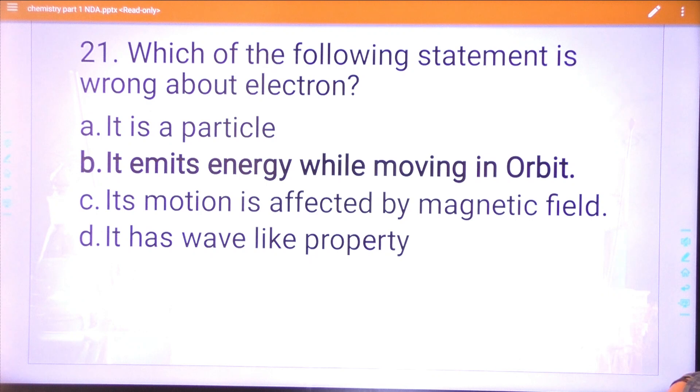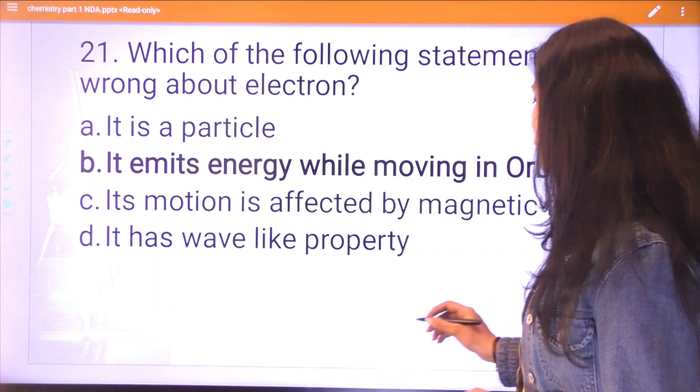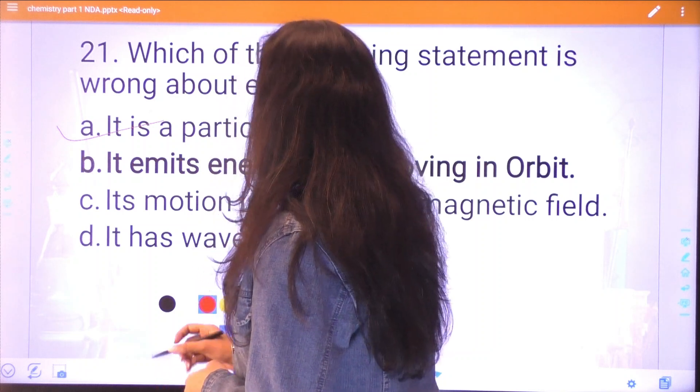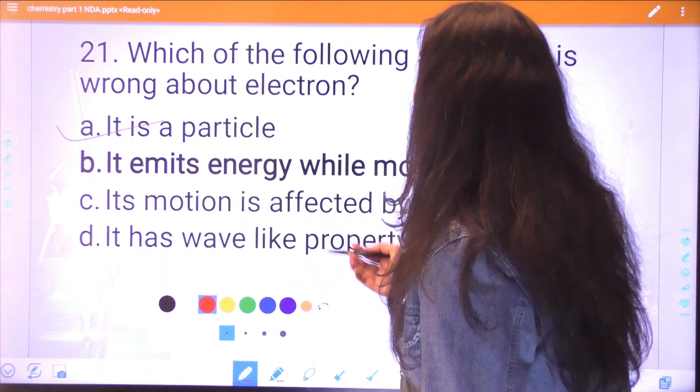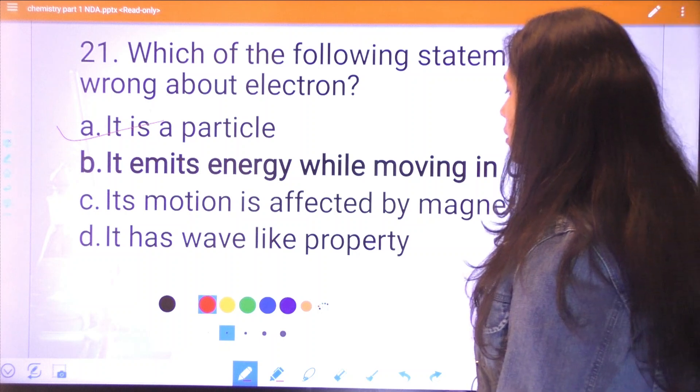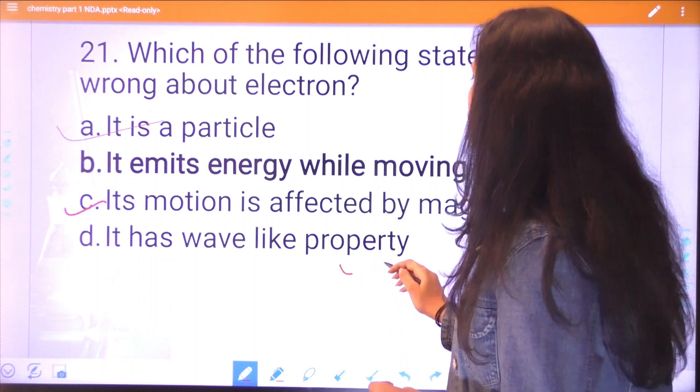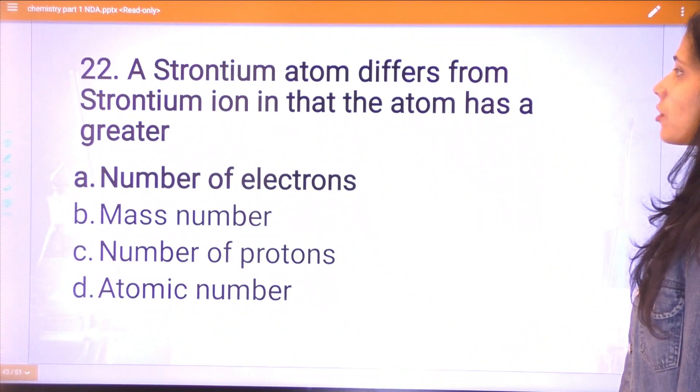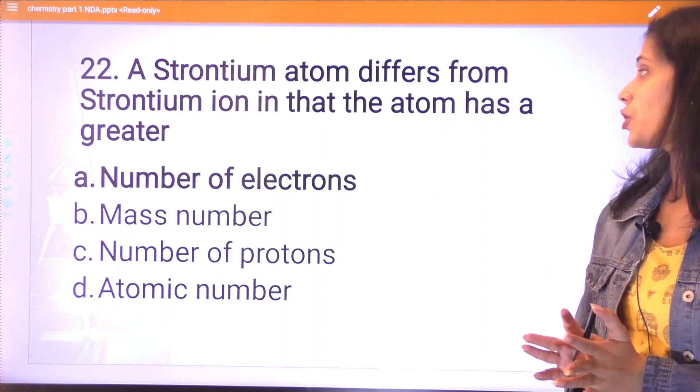Question twenty-one: which of the following statements is wrong about the electron? Electron is a particle. It emits energy while moving in orbit. Its motion is affected by a magnetic field. It has wave-like property. The second statement is wrong - electron does not emit energy while moving in orbit.